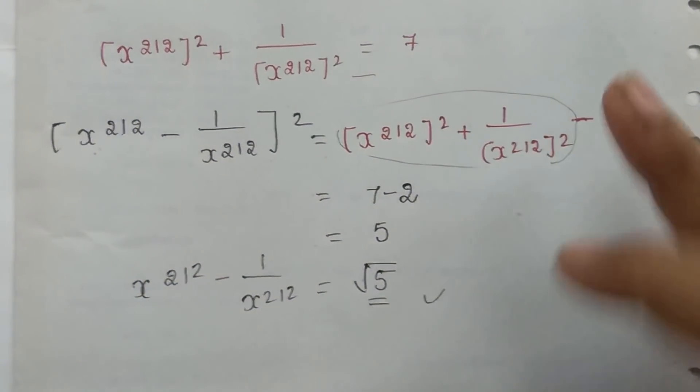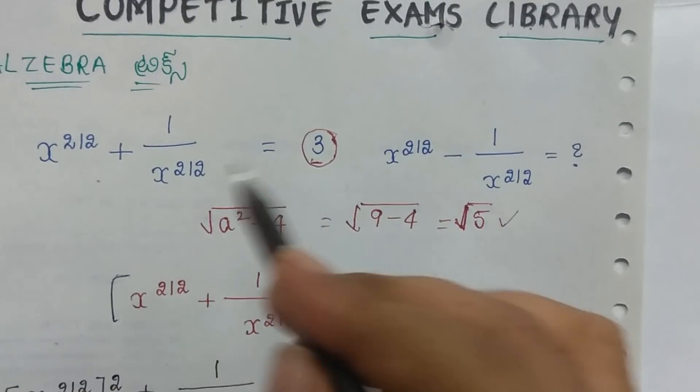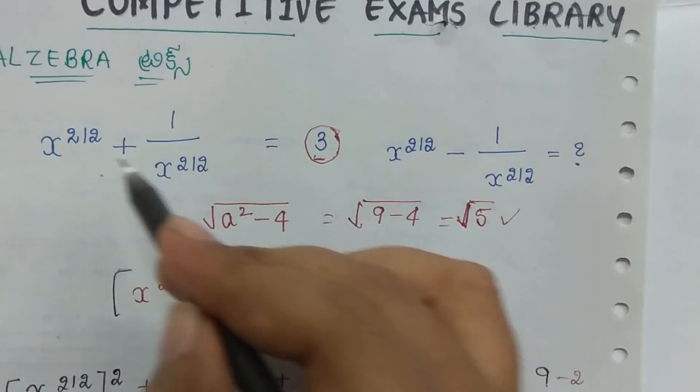So the concept is: just simple shortcut formula. Apply root(a² - 4) directly.